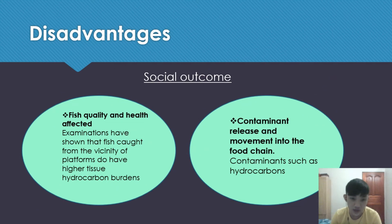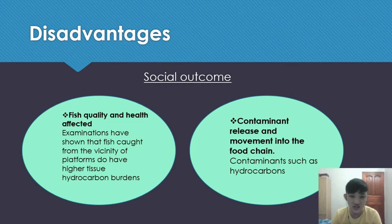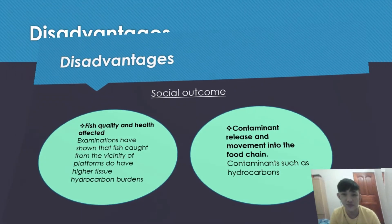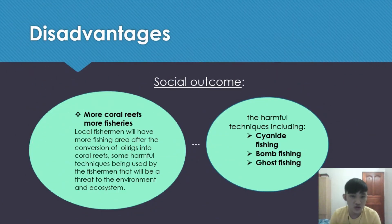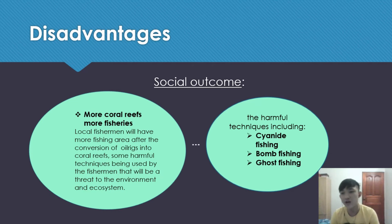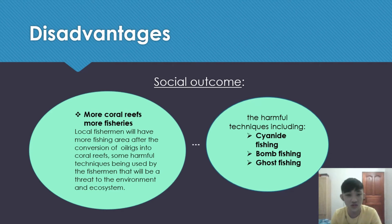For the social outcome, fish quality and health were also affected. Examinations have shown that fish caught from the vicinity of platforms do have higher tissue hydrocarbon burdens. Contaminant release and movement into the food chain, including hydrocarbons, is also a concern. More coral reef means more fisheries, and local fishermen will have more fishing area after the conversion of oil rigs into coral reefs. However, harmful fishing techniques used by fishermen — including cyanide fishing, muro-ami fishing, and coast fishing — will definitely be a threat to the environment and ecosystem.